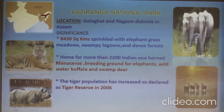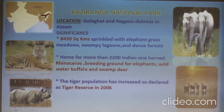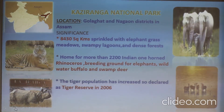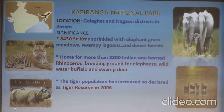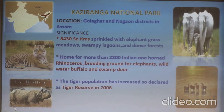What about the significance of Kaziranga National Park? It covers 8,430 square kilometers, sprinkled with elephant grass meadows, swampy lagoons and dense forest. It is the home for more than 2,200 Indian one-horned rhinoceros, and serves as a breeding ground for elephants, wild water buffalo and swamp deer.